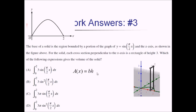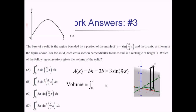So we're going to rewrite this as just 3b. Now we have to express this in terms of x, because we're perpendicular to the x-axis, and that's what all the answer choices have. The base is just the height of this function itself — that's what the base is. So that means we're going to have 3 times sine of pi over 2 times x. Putting it all together into an integral, the volume is the integral from 0 to 2 of 3 sine of pi over 2 times x, dx.